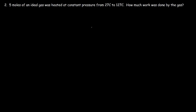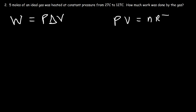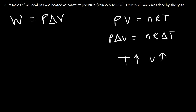Now let's move on to number 2. 5 moles of an ideal gas was heated at constant pressure from 27 degrees Celsius to 127 degrees Celsius. How much work was done by the gas? We know that work equals pressure times the change in volume, and according to the ideal gas law, PV = nRT, so P ΔV = nR ΔT.